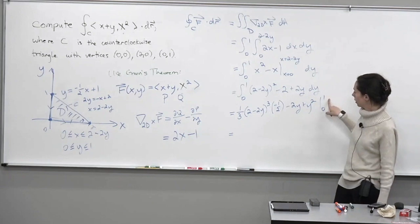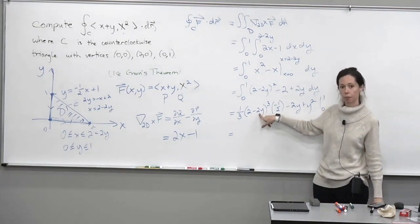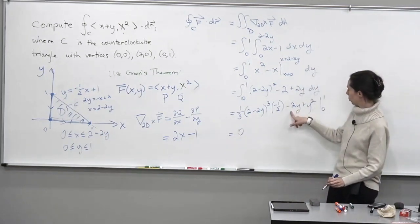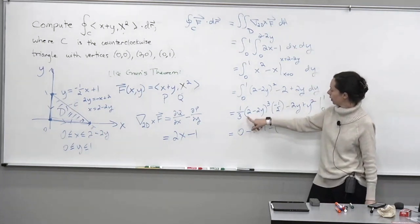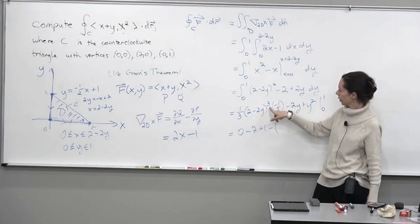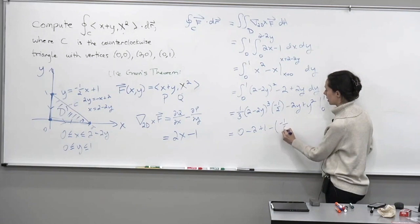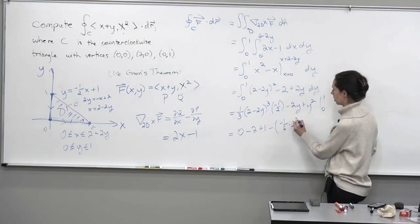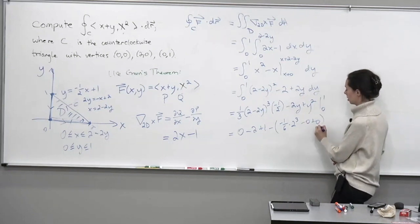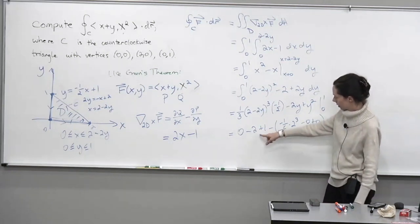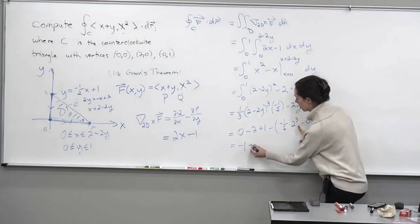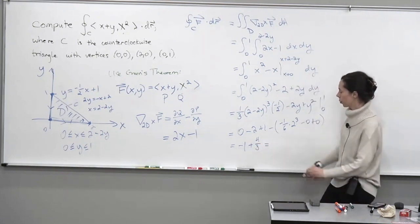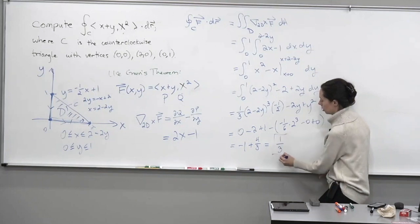All right, when we plug in 1, we get, in here, 2 minus 2. So the first term is going to be 0. And then minus 2 plus 1. And then plug in 0, and we get 1/3 times 2 cubed. So 2 minus 0 cubed times negative 1/2. I'm just going to write this out as negative 1/6 times 2 cubed, and then minus 0 plus 0. All right, so that's negative 2 plus 1 is negative 1. And then 2 cubed is 8. So plus 8/6 or 4/3. Okay, so negative 3/3 plus 4/3 is 1/3.